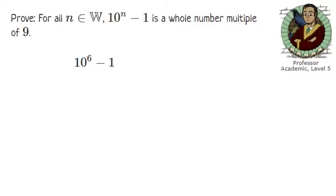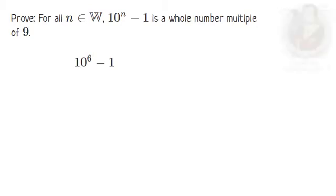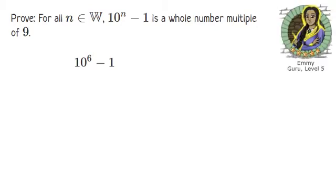For example, take 10 to the power of 6 and subtract 1. Emi, what number's that? 10 to the power of 6 is a 1 followed by 6 zeros, that's 1 million, then take away 1.